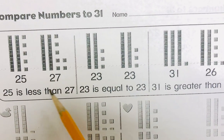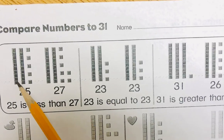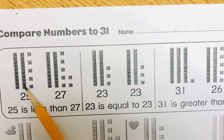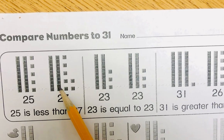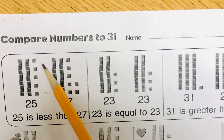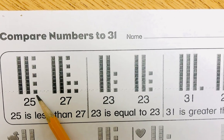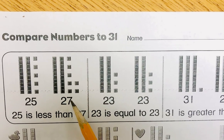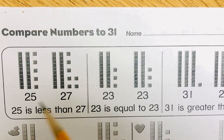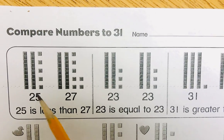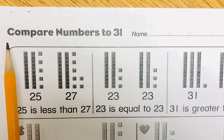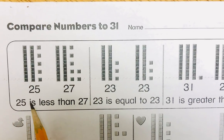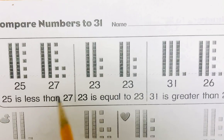25 is less than 27. One group of 10, one group of 10. Second group of 10, second group of 10. But 25 only has five little ones. 27 has seven little ones. So since seven is larger or greater, more than five. Now remember, in math, we do the same. We read from left to right. So 25 is less than 27.